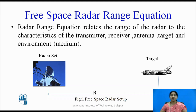The radar range equation relates the range of the radar to the characteristics of the transmitter, receiver, antenna, target, and the environment — or the media through which the signals are transmitted.